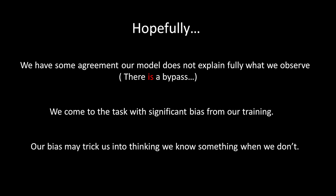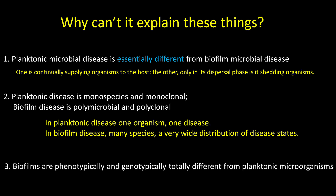Hopefully we have some agreement that our model does not fully explain what we all observe — in other words, there's a gap. We come to our task with significant bias from our training, and that bias may trick us into thinking we know something when we really don't. So why can't our model explain these things? The planktonic disease model — the contagion model — is essentially different from the biofilm microbial disease model.